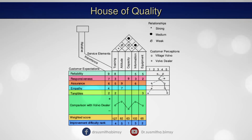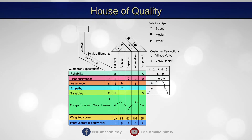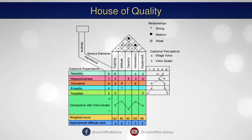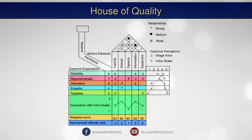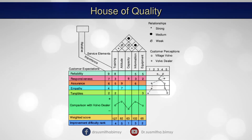Next is the overall importance of service elements for meeting customer expectations — that is, the weighted score on the floor of the house. The weighted score represents the total points for each element, which is calculated by multiplying the importance weights by the element association ratings and adding all of the scores for each element together.